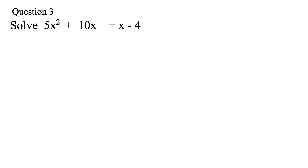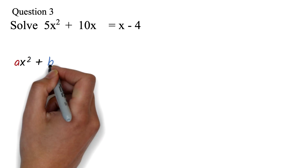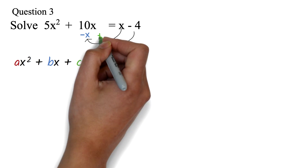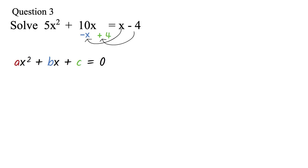Let's take our next question. Question 3: Solve the quadratic equation 5x squared plus 10x equals x minus 4. We will be using the quadratic formula. First, make sure your equation is in the form ax squared plus bx plus c equals 0. This is not in that form. We have to move the x and minus 4. Since the x is positive, we move it across the equal sign to become minus x. Since we have minus 4, we move it across to have positive 4. We can add like terms: 10x minus x will be 9x. So we have 5x squared plus 9x plus 4 equals 0. Now it's in the form that we want.